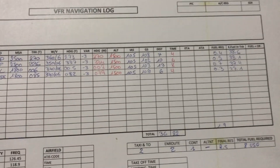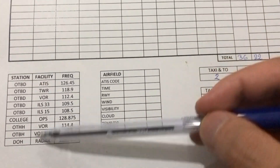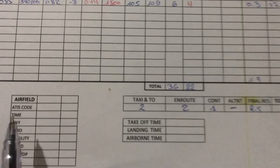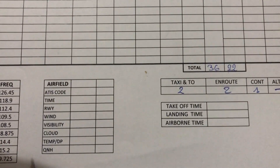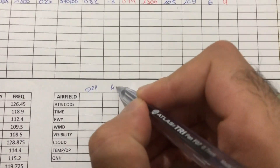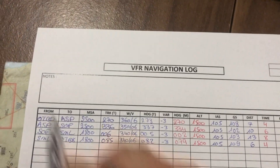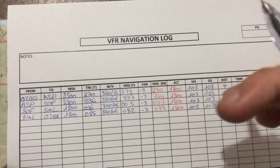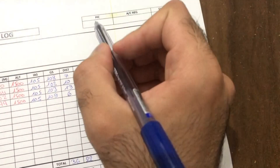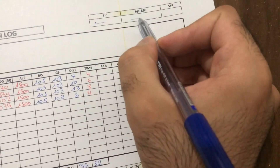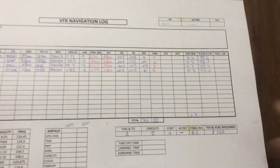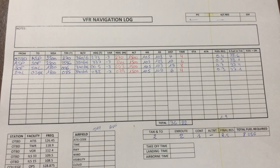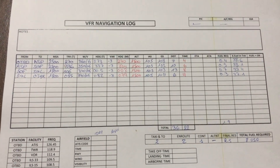We already have all the frequencies listed — even ones we may not use, it's better to have them. There's a box for the ATIS for departure and arrival. The notes box is for any useful information needed during the flight, such as diversion calculations if required. Finally, fill in the PIC name, aircraft registration, and the SSR squawk code. That's pretty much it — if you have any questions please leave them in the comments, and if I missed anything, feel free to correct me.